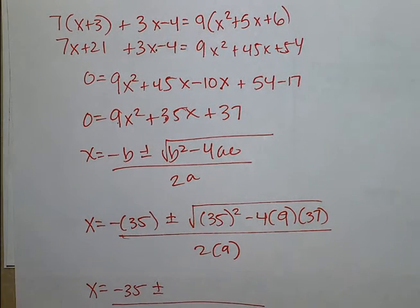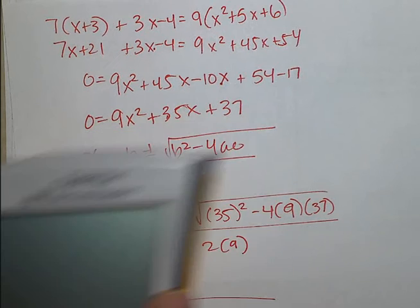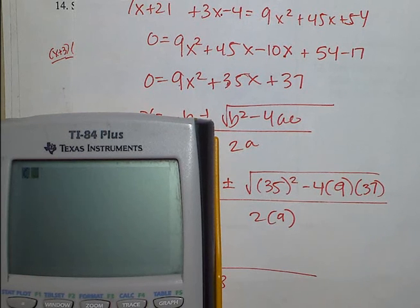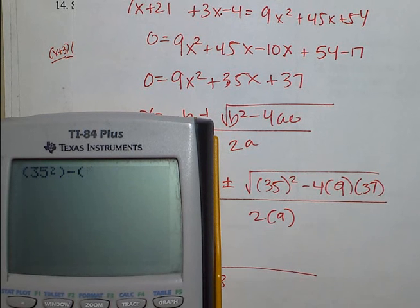Okay, I'm going to use the calculator to do this portion. All right. Parenthesis 35 squared. Subtract 4 times 9 times 37. That's going to be the number that's inside of the radical.